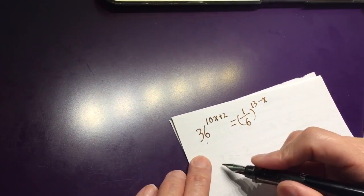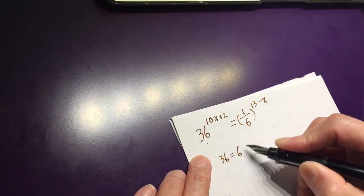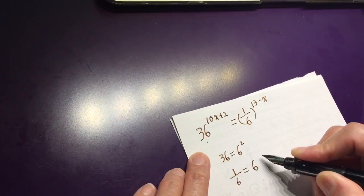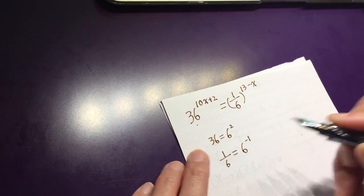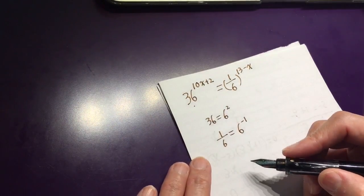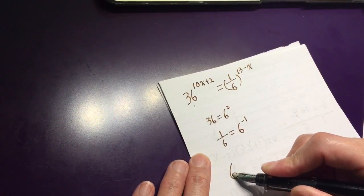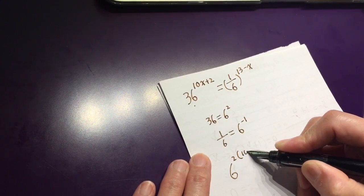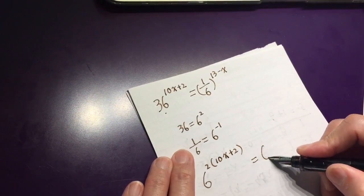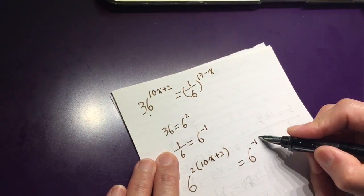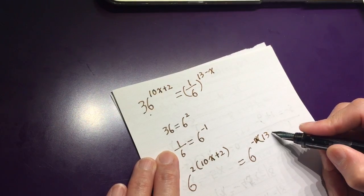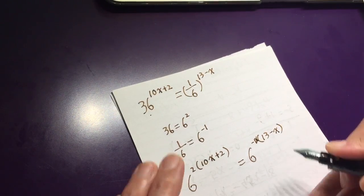Find the commonality. 36 equals 6 to the power of 2. 1 over 6 equals 6 to the power of negative 1. So, replace 36 with 6 to the power of 2 to the power of 10x plus 2 equals 6 to the power of negative 1 times 13 minus x, right?